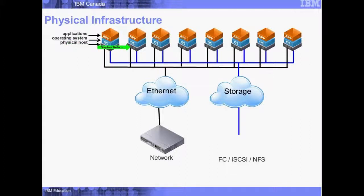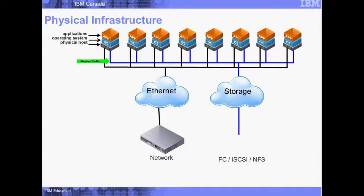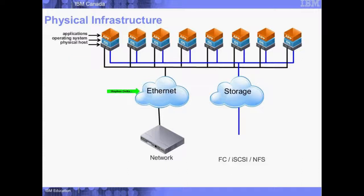This is the old way of doing things — we may have thousands of these machines, typically hooked up to what we call a storage area network, shown here in this little cloud. We've got our fiber channel connection to a SAN as the back-end network for storage. Then your servers would typically be hooked up to an Ethernet network, which allows clients to talk to these machines.